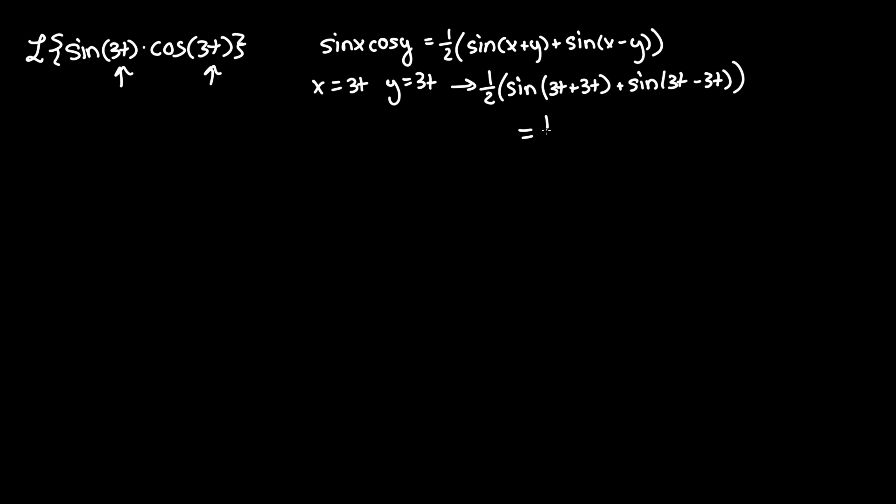So that equals one-half sine of 6t plus sine of 0, which equals 0. So just one-half sine of 6t.